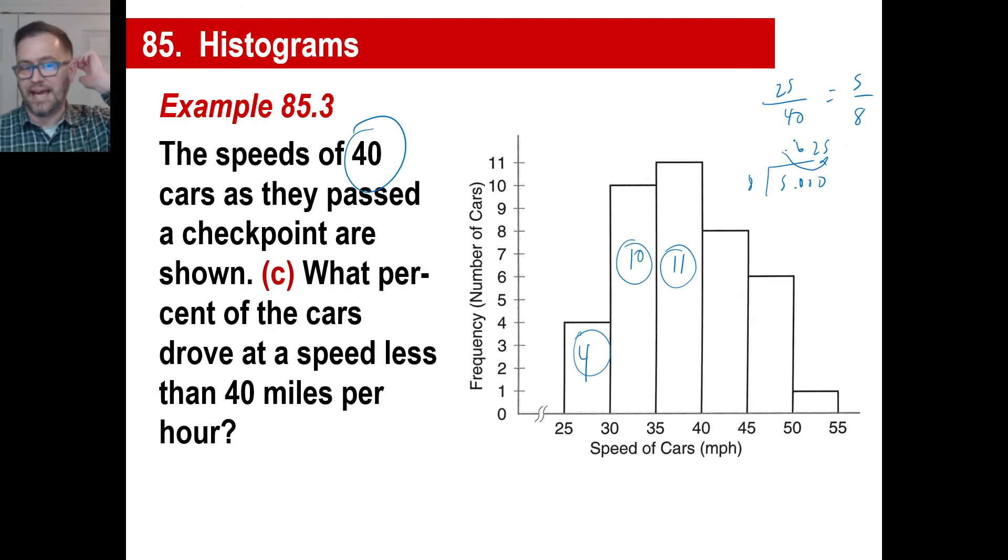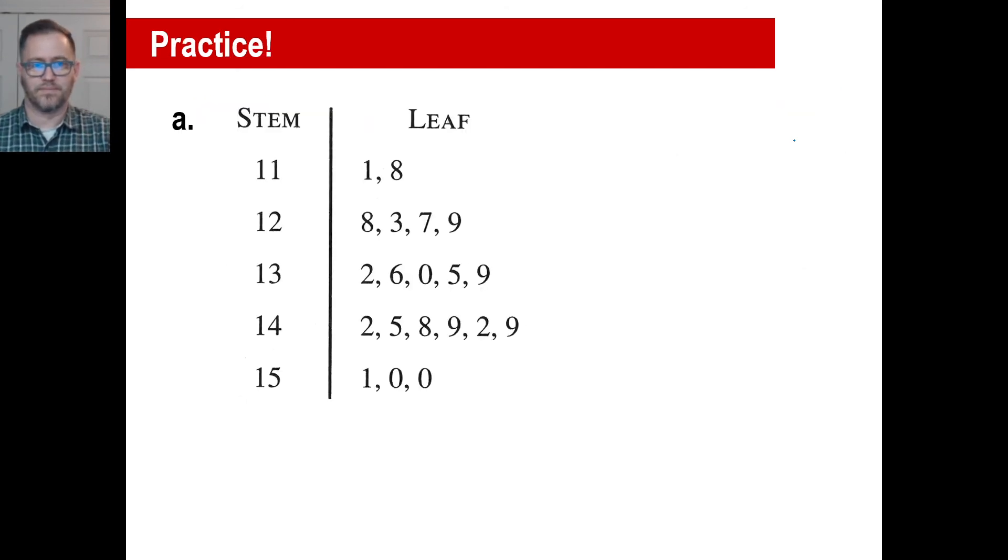Go ahead and try practice problem A, and then I'll click it over here in just a second. So, pause it. All right, that is your stem-and-leaf plot. That's what yours should look like. You need to have 100 as the one on the left, and you need to have your 10s, which would be 100. The first one would be 111, then 118, and so on. All right, pause it and try B.